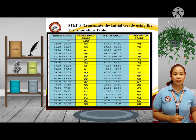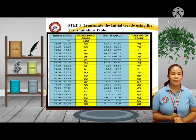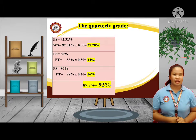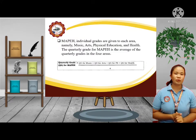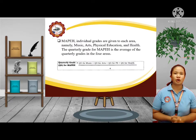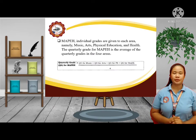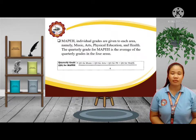Step 5: Transmute the initial grade using the transmutation table. So 87.7% transmutes to 92%, and 92% is the final grade that appears in the report card. Take note that MAPE individual grades are given to each area — music, arts, physical education, and health. The quarterly grade for MAPE is the average of the quarterly grades in those four areas. These steps are based on DepEd Order No. 8, series of 2015.